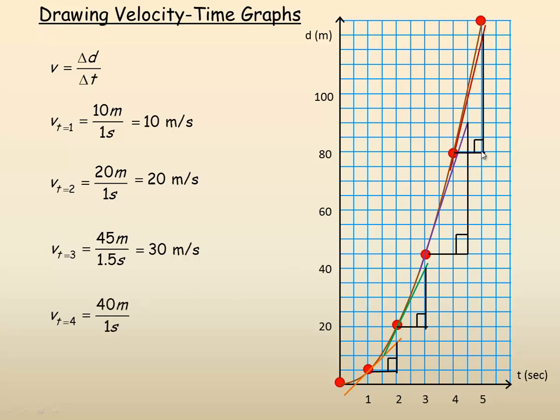And at 4, this one here, I went down to a time of 1 second again. And the 10, 20, 30, 40 is the displacement. So 40 divided by 1 is, of course, 40.